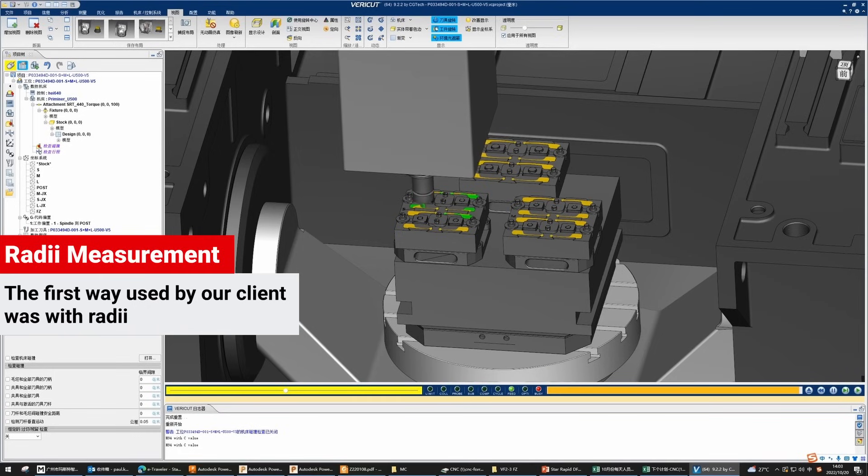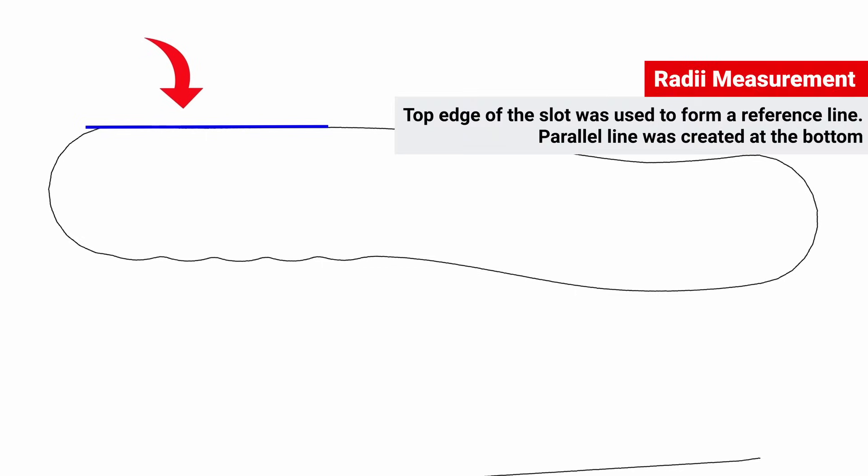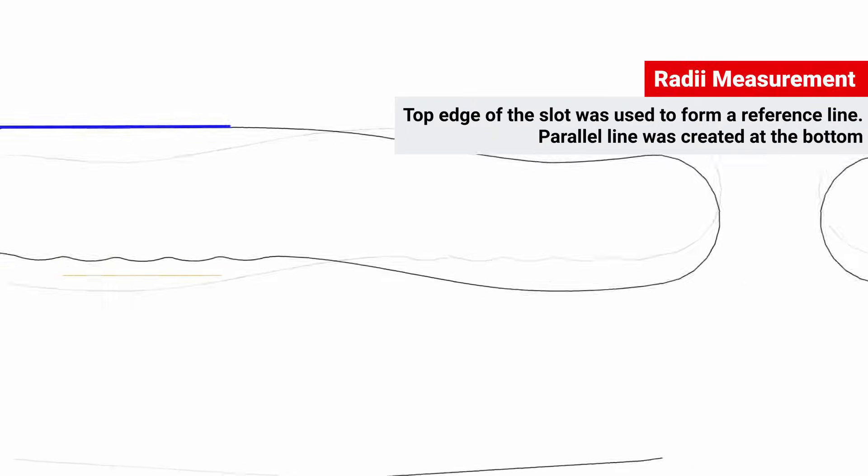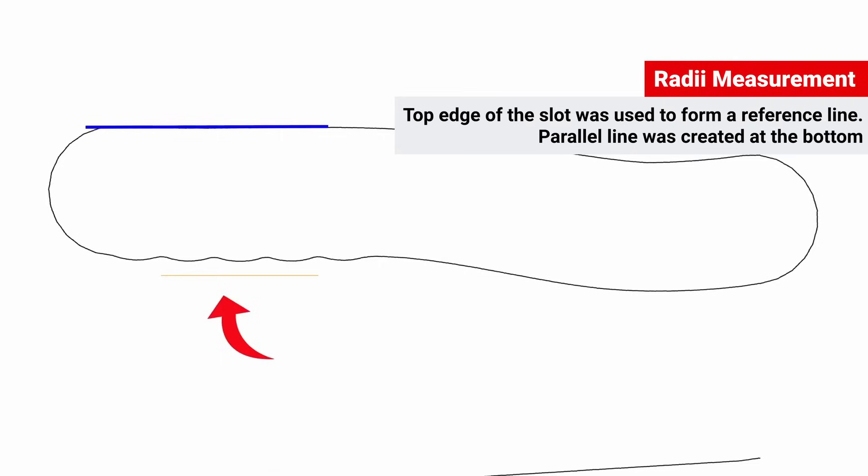The first way, used by our client, was with radii, which you can see in more detail here. In this technique, we first nominated a reference line against which we measured the feature. We used the top edge of the slot to form the reference line, and then created a second, parallel line.